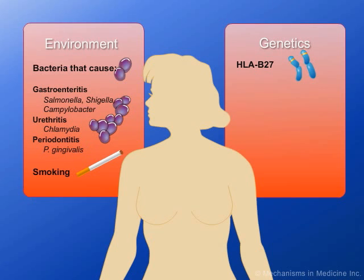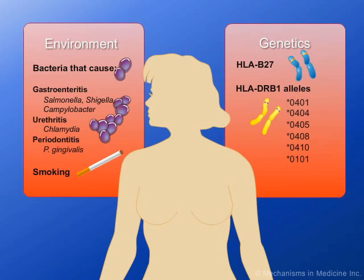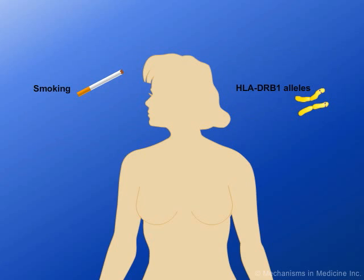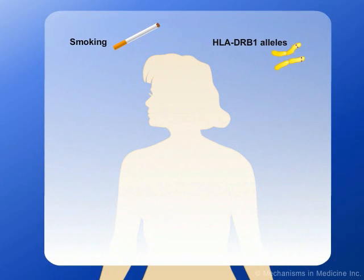Genetic contributors include the HLA-B27 allele, found in 16% of early UA patients, and the HLA-DRB1 alleles, known as the shared epitope. The shared epitope has been found in up to 32% of patients with UA. A close association has been found to exist between HLA-DRB1 alleles and cigarette smoking.